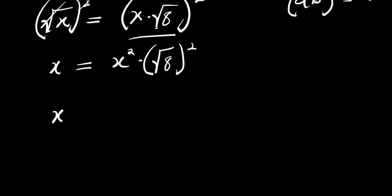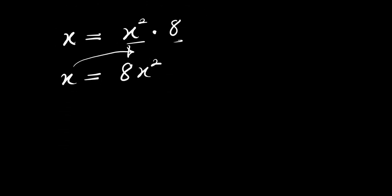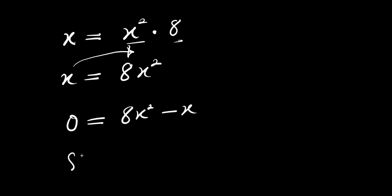So from here I have x equals x squared times 8, which is 8x squared. Moving x over, I'm going to have 0 equals 8x squared minus x, or rearranged: 8x squared minus x equals 0.